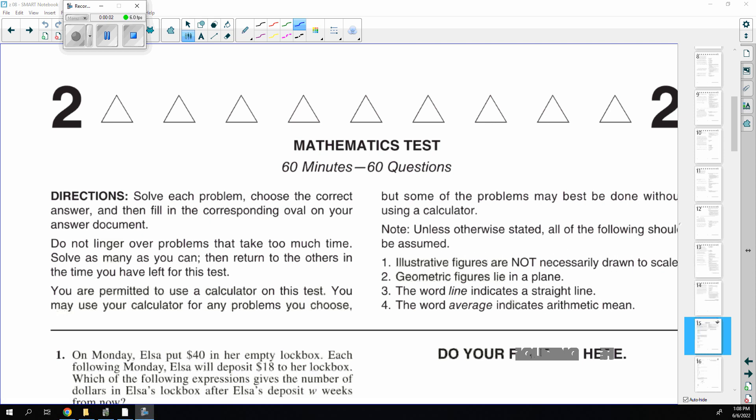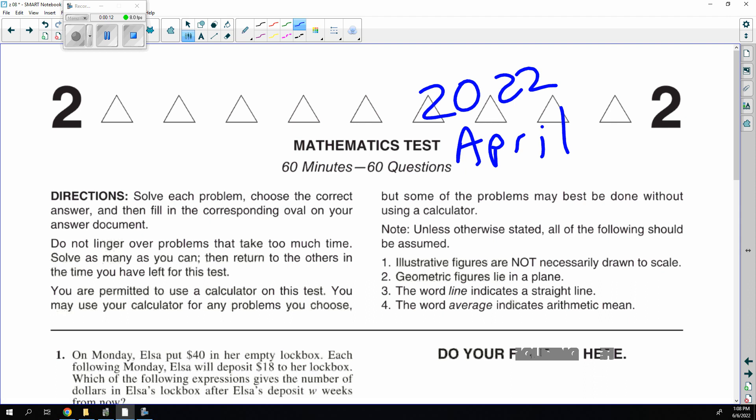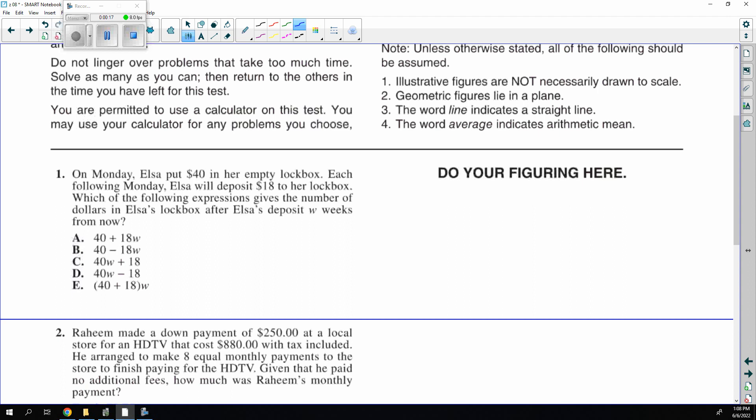Hello everyone, this is April 2022 and it was the alternate test. Many did not take this. I think it was given on alternate days. Elsa put $40 into her box and each week she will deposit $18. So how much will be left after W weeks? She's going to do 18W times and the answer is 40 plus 18W.